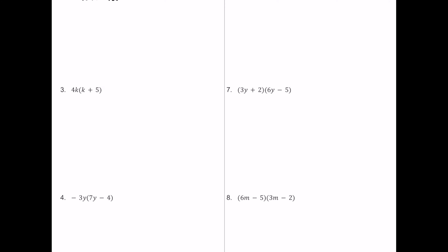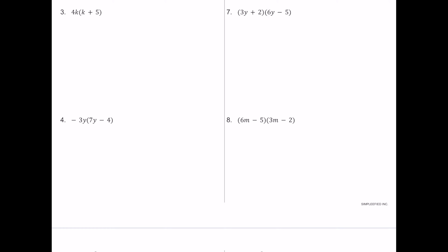For number three, we have 4k multiplied by k plus 5 — another monomial multiplied by a binomial. 4k times k is 4k squared, since k times k is k squared. Then 4k times 5 is positive 20k. That would be the product.